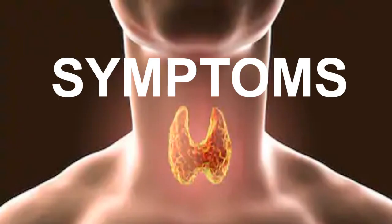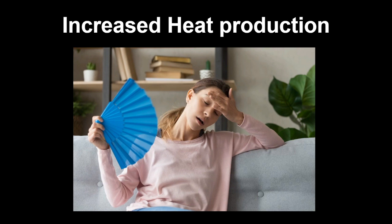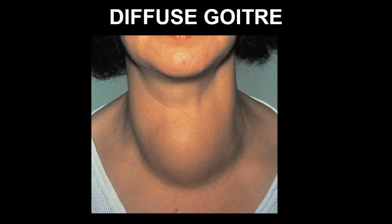Now, what are the main symptoms seen in Graves' disease? The very first thing noticed is a marked increment in the BMR. We know the thyroid hormone's main function is to maintain the basal metabolic rate of our body, but because of the hypersecretion of thyroid hormone, there is a marked increment in BMR. As a result, marked weight loss is seen in the patient despite an increased intake of food. There is also increased heat production leading to discomfort, excessive sweating, and a greater intake of water in warm environments. Additionally, diffuse goiter is seen in Graves' disease patients.